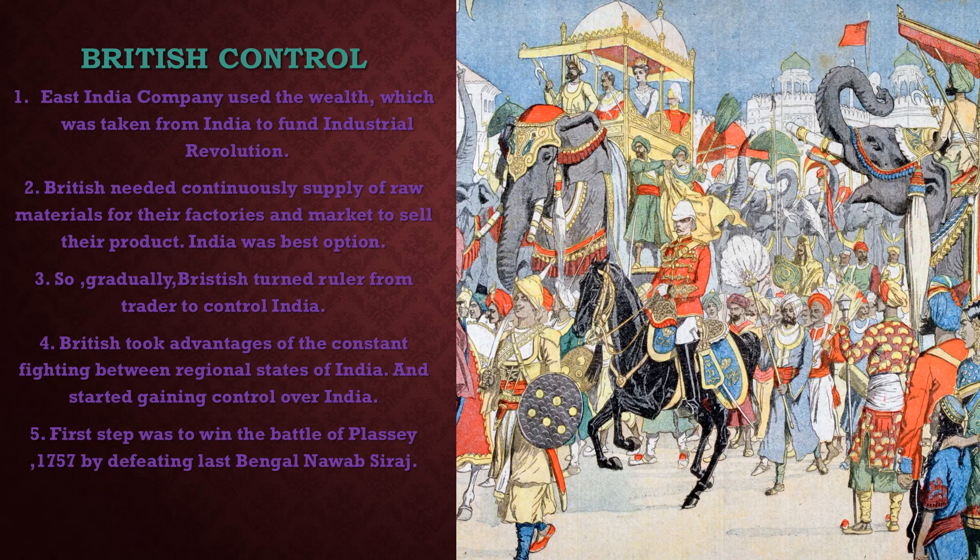British took advantage because the main Mughal empire was declining. Several regional empires like Rajasthan, Bengal, and Maharashtra emerged as independent dynasties. British took these opportunities and started gaining control over India.